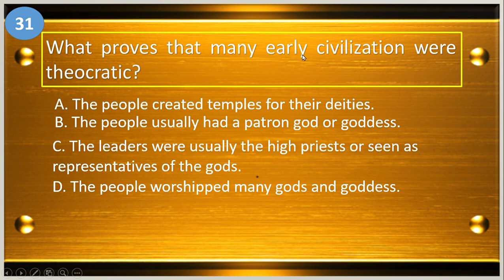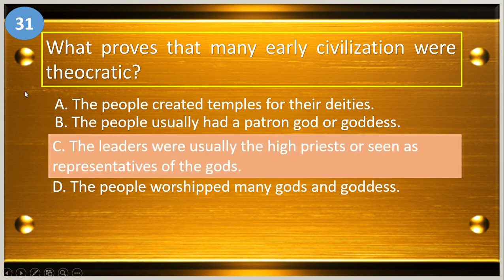Number thirty-one: what proves that many early civilizations were theocratic? A, the people created temples for their deities; B, the people usually had a patron god or goddess; C, the leaders were usually the high priest or seen as representative of the gods; and D, the people worshipped many gods and goddesses. The answer is letter C.